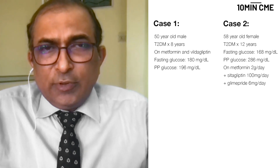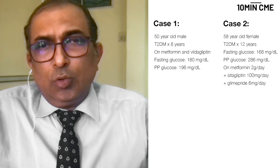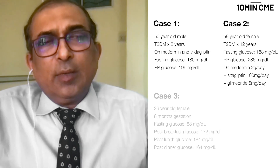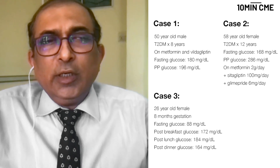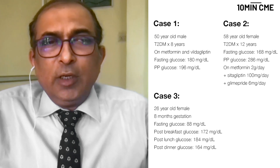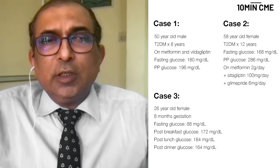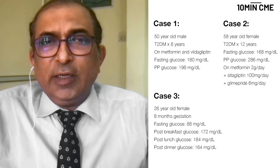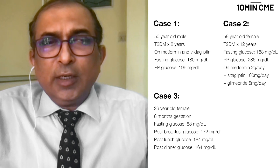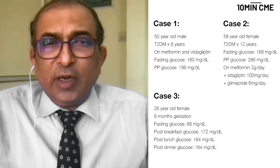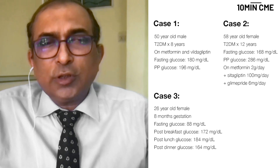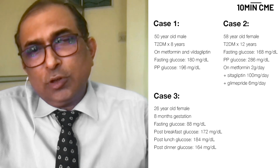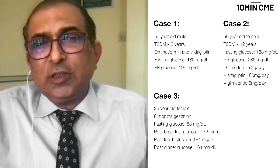What type of insulin are we going to use in this lady as compared to a 26-year-old female who is in the eighth month of gestation, with a fasting glucose of 88, a post-breakfast glucose of 172, a post-lunch value of 184, and a post-dinner value of 164?